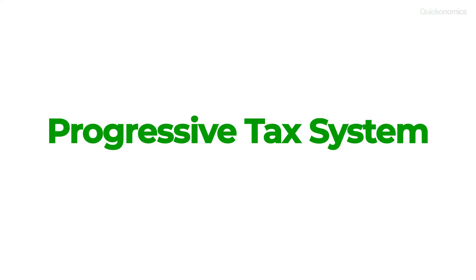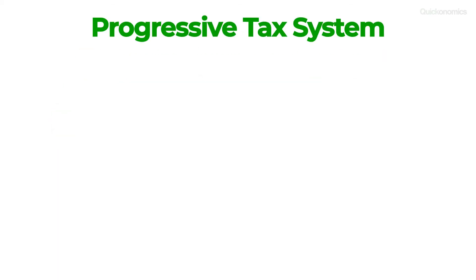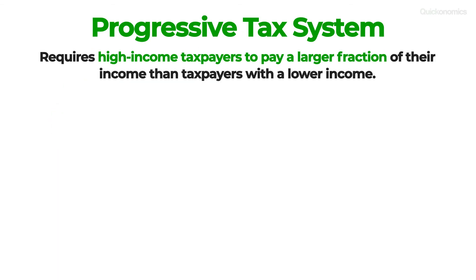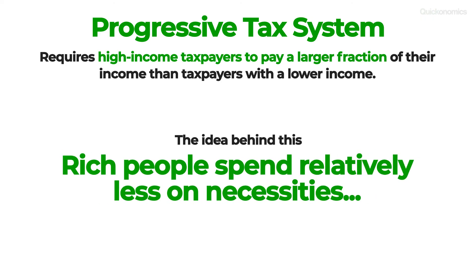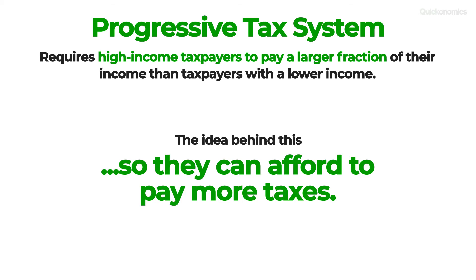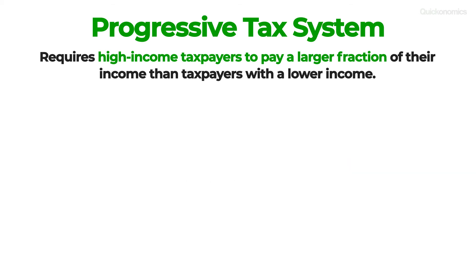Finally, we have the progressive tax system. Progressive taxes require high-income taxpayers to pay a larger fraction of their income than taxpayers with a lower income. That means as the income grows, so does the tax rate. The idea behind this is that wealthy people spend relatively less on the basic necessities in life, so they can afford to pay more taxes and still maintain their standard of living. To see how that works, consider a progressive tax system with three tax brackets.